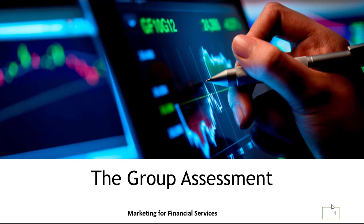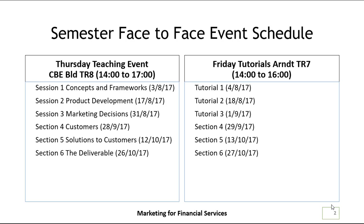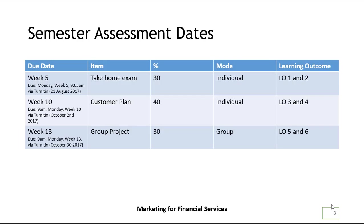The third and final part of the Marketing for Financial Services assessment tasks is the group assessment item. As this culminates the semester, it will allow you to draw on all six sections of the course. It is designed to drop in just slightly after semester ends, given that we are a late-in-the-week class running on Thursday and Friday of week 12. The decision was made to have the assignment come in the weekend following, after our last education event and last tutorial.